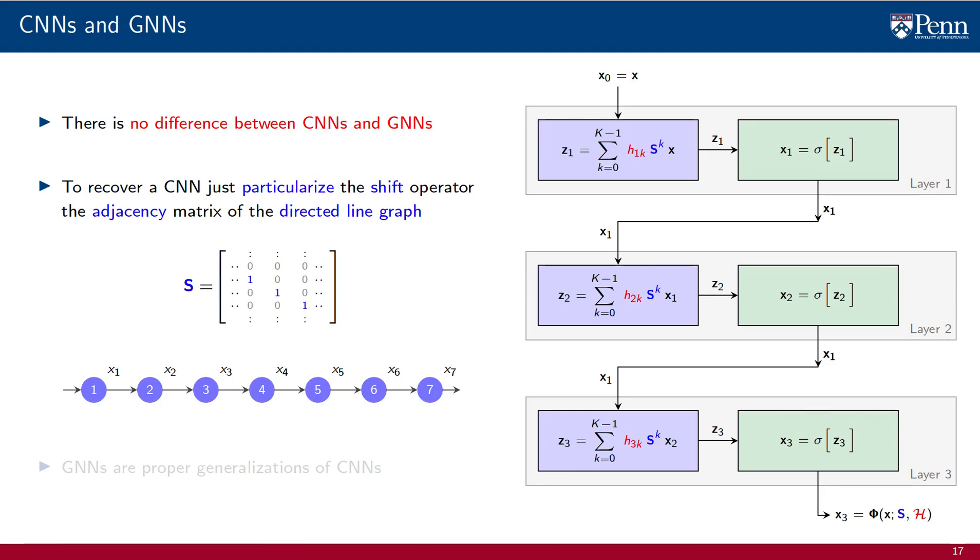To recover a CNN, we just particularize the shift operator to the adjacency matrix of the directed line graph. We know that this is true because we have seen that convolutional filters in time are particular cases of graph convolutional filters. This equivalence comes from particularizing the shift operator to the adjacency matrix of the line graph.